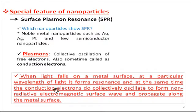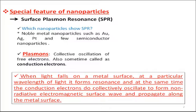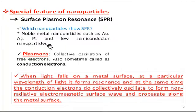Plasmons are nothing but the collective oscillation of free electrons, also called conduction electrons. In the case of noble metals like gold, silver, or platinum, those conduction electrons are present in the outermost d and h orbitals of their valence shell. So whatever surface electrons we have been talking about are mainly present in those outermost d and h orbitals.